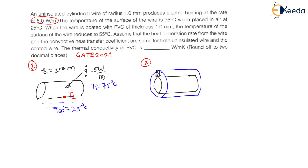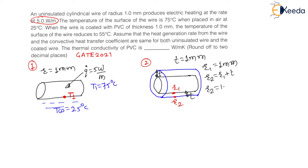R1 is 1 mm because the radius of wire is 1 mm, and coating thickness is 1 mm, therefore R2 equals 1 plus 1 which is 2 mm. Then, in this second case, the temperature of surface of wire reduces to 55 degrees Celsius. So temperature T1 in the second case is 55 degrees Celsius, while in the first case temperature is 75 degrees Celsius.